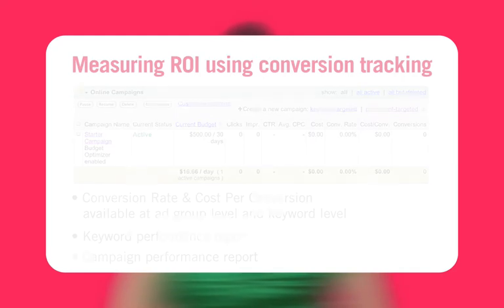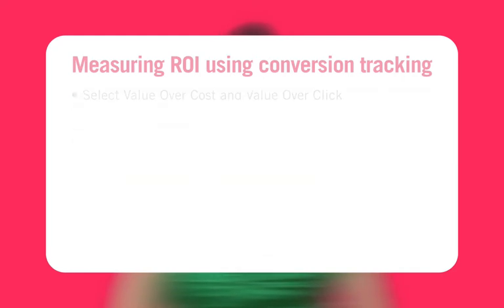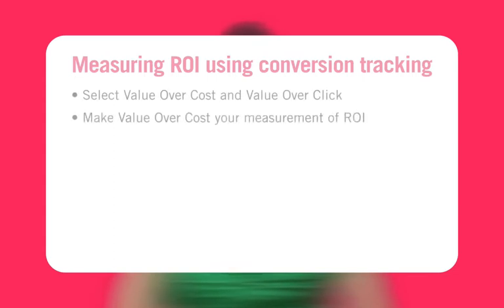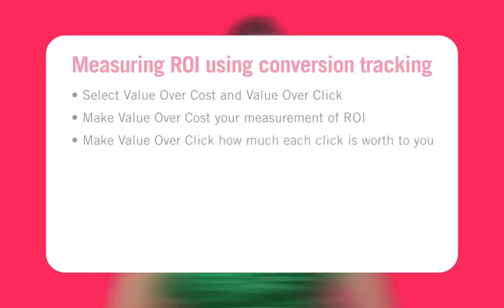Be sure to select value over cost and value over click, making value over cost the measure of ROI and value over click equal to how much each click is worth to you. Value is the amount you defined when setting up conversion tracking.